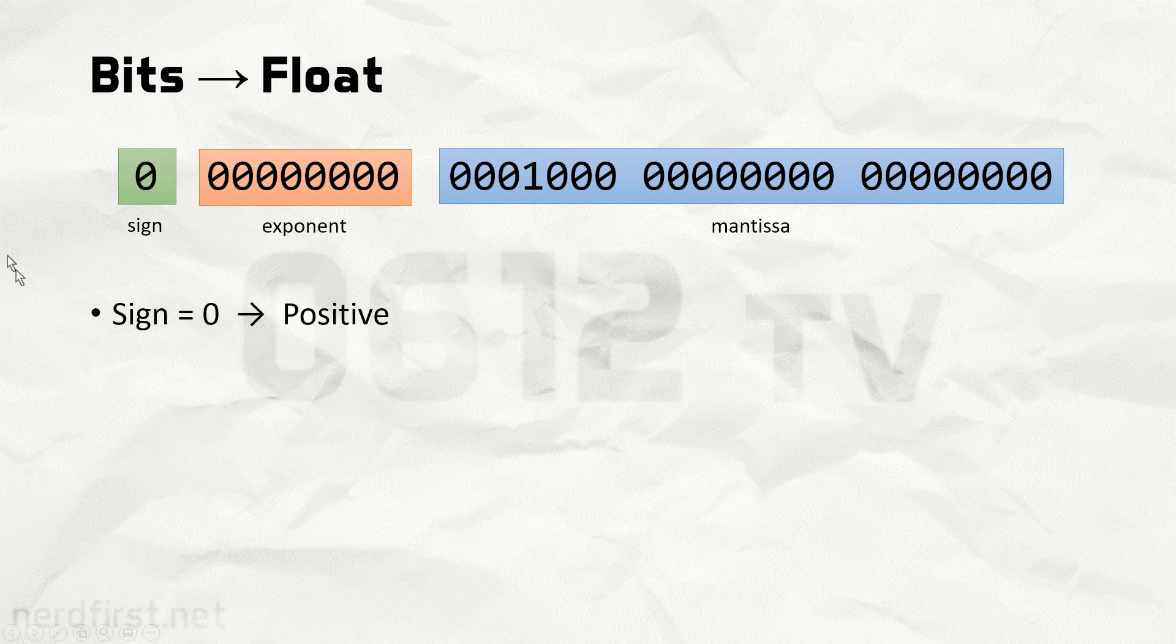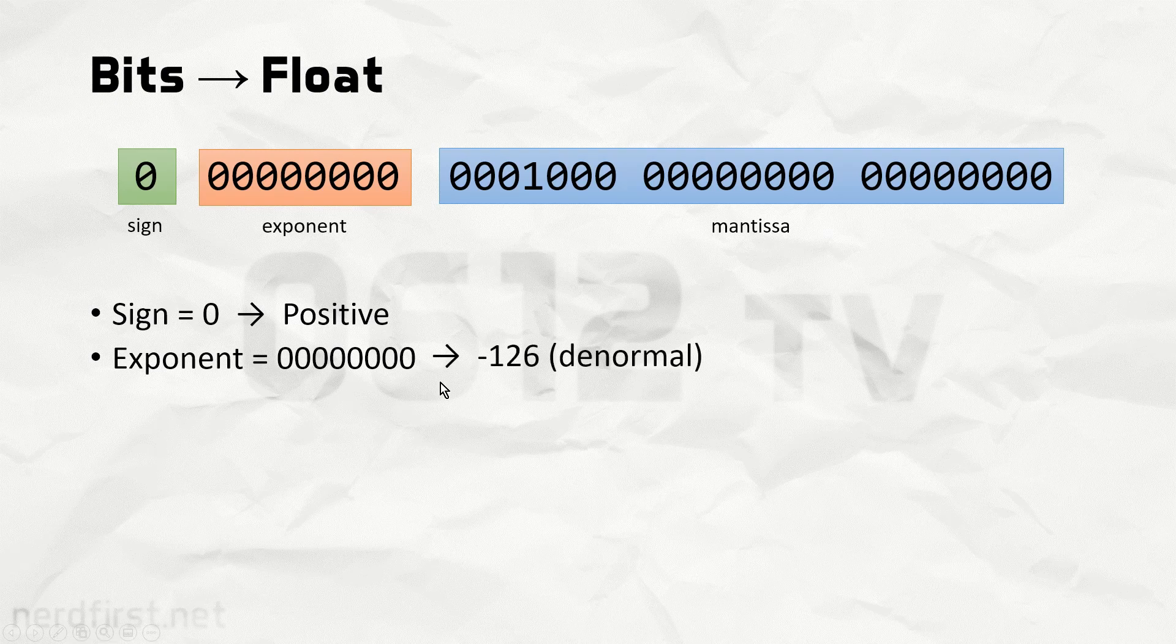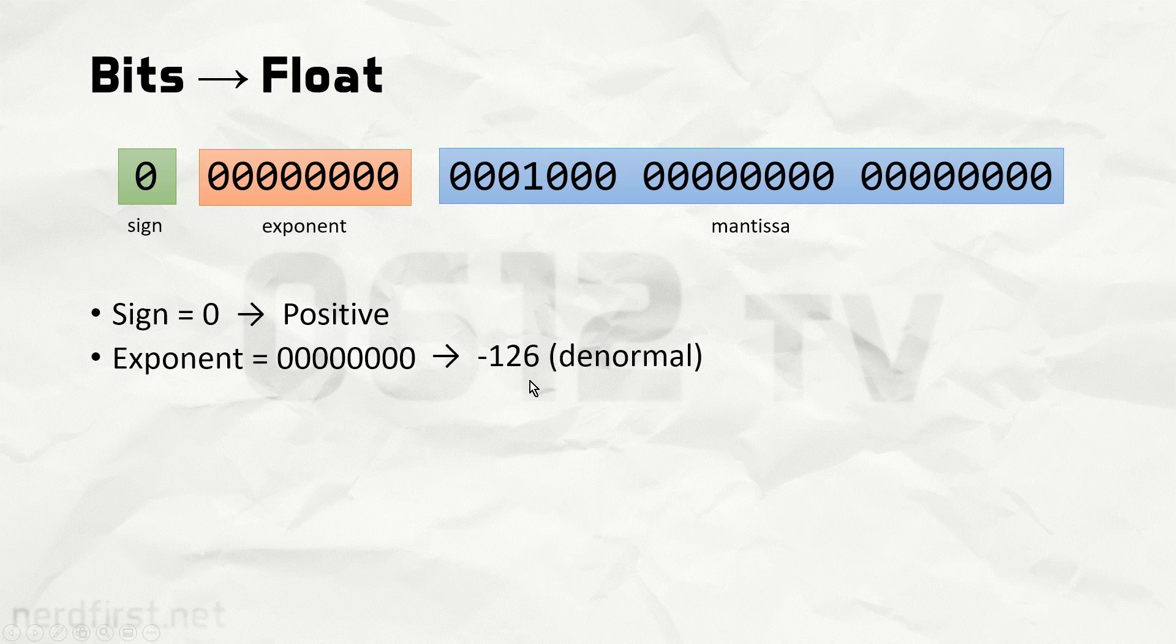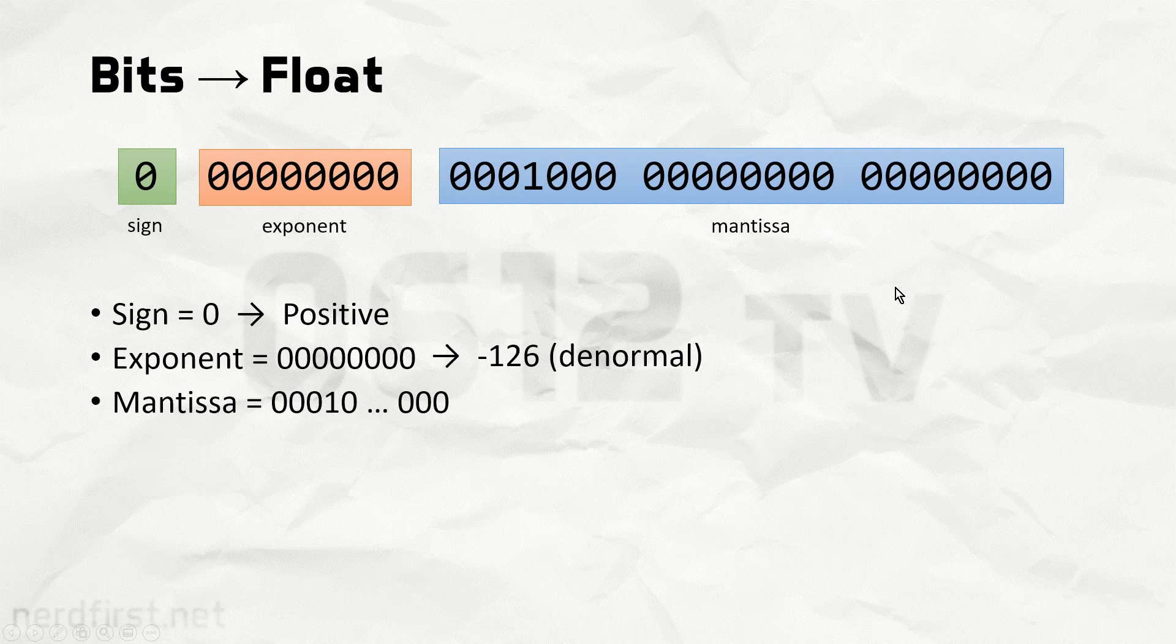Starting off with the sign, zero means it's positive, no fuss. The exponent itself is all zeros, and this actually tells us two things. First and foremost that the actual exponent number is negative 126, this one is fixed, and of course that the number itself would be denormal. This allows us to move on nicely to the mantissa itself.